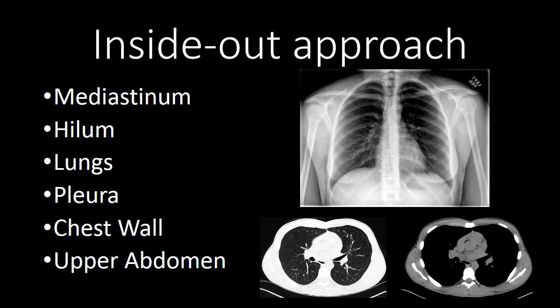Many different approaches have been described. I like the inside-out approach. I start by looking at the mediastinum, the hila, then the lungs, the pleural surface, the chest wall, and then the upper abdomen. By doing this in the same way every time, I am more consistent in the abnormalities that I find. I also employ a very similar inside-out approach when I'm looking at a chest CT.